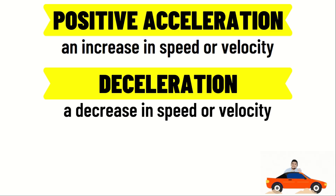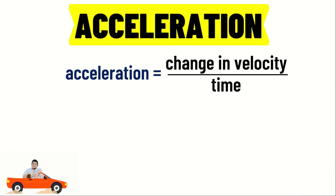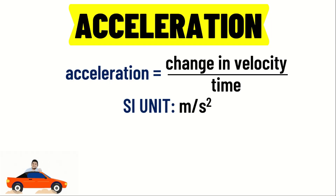Acceleration can be determined using the formula: average acceleration is equal to the change in velocity divided by the time to make this change. The SI unit for acceleration is m per second squared.